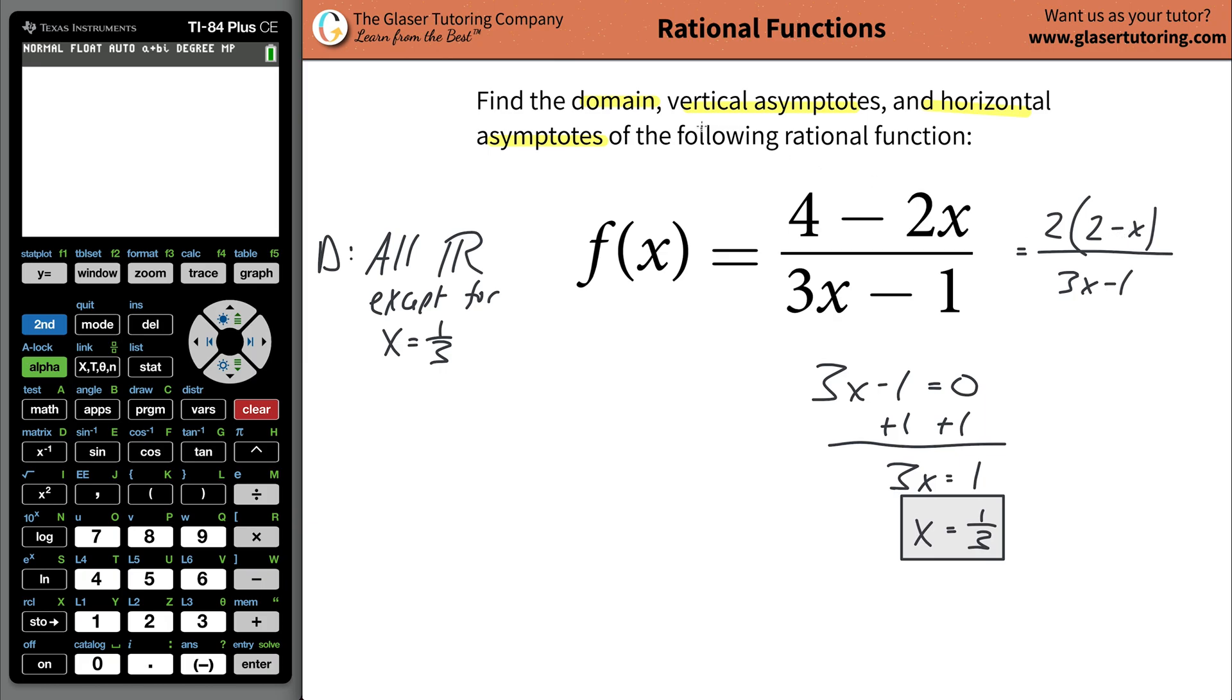So on this problem, there is nothing to cancel. However, on some problems, there might be. And what you want to do is you want to cancel those common terms. And then what's ever left in the denominator, that's what you set equal to zero. But in this problem, since there is nothing to cancel, what I would do is just take the denominator now and set it equal to zero and solve it for x. That gives us our vertical asymptote.